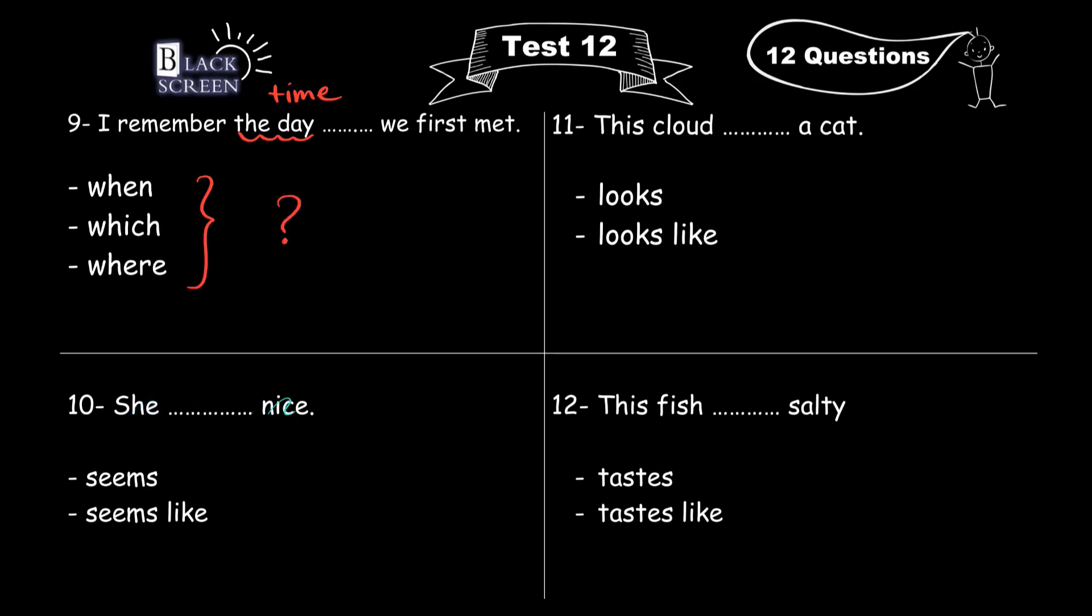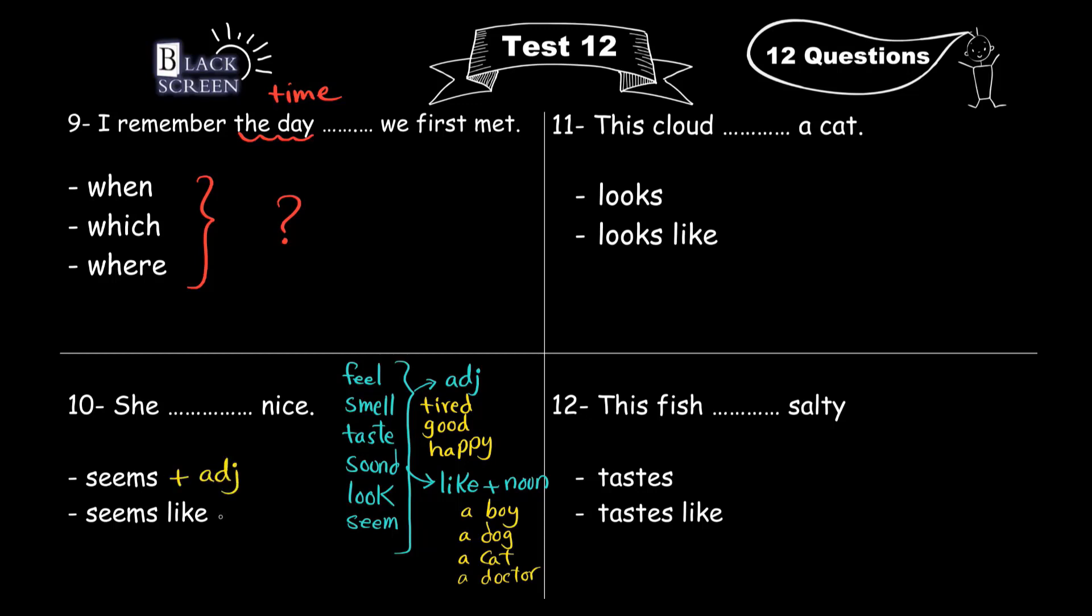She, blank, nice. She seems nice, or she seems like nice. What's the difference? Listen guys. The verbs feel, smell, taste, sound, look, seem. Normally they're followed by an adjective. Like you look tired, or it sounds good, or she seems happy. But sometimes they're followed by like plus a noun. And a noun is the name of something. Like a boy, a dog, a cat, and a doctor, and so on. So seems alone needs an adjective. And seems like needs a noun.